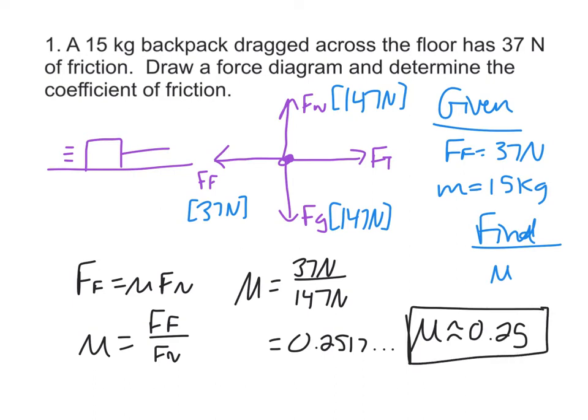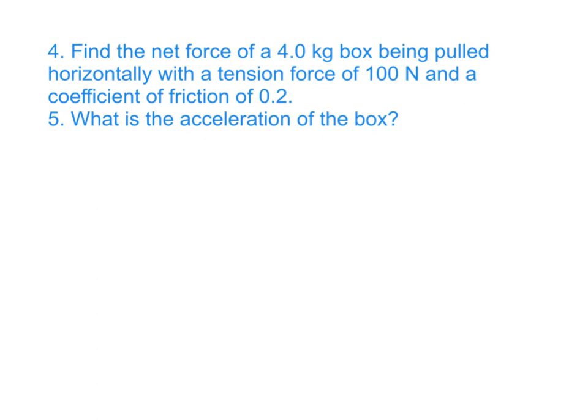I'm going to do one more example, and it's going to be number 4 and 5 since it's pretty much one problem. Here I'm going to combine numbers 4 and 5. It tells us to find the net force of the 4 kilogram box being pulled horizontally with a tension force of 100 newtons and a coefficient of friction of 0.2. And then 5 is asking for the acceleration of that box.